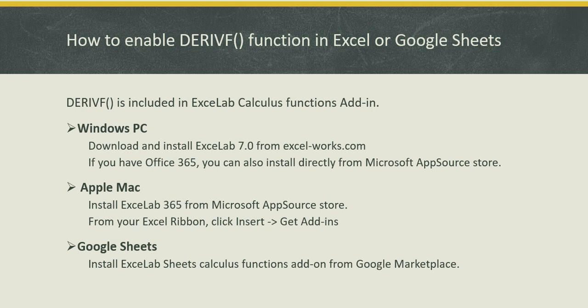If you're running Excel on an Apple Mac, you will have to install Excelab 365 from Microsoft AppSource Store. Simply in your Excel ribbon click Insert and then select Get Add-ins, search for calculus and you will find the add-in. Just click Add to enable it. If you are in Google Sheets just go to the Google Marketplace and search for calculus. You'll find the calculus functions add-on and install it.